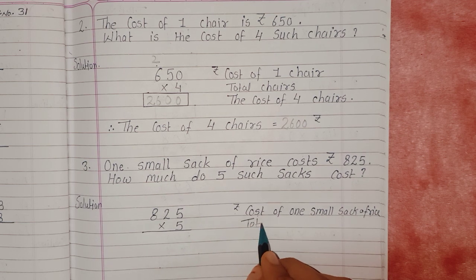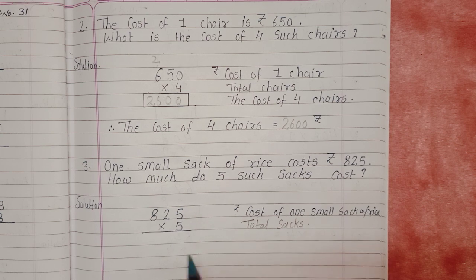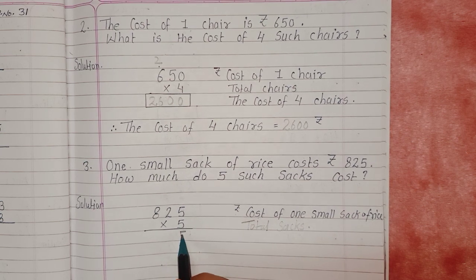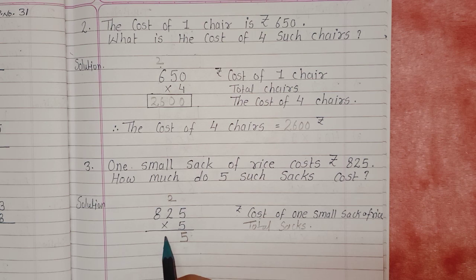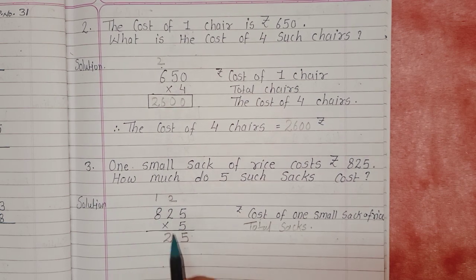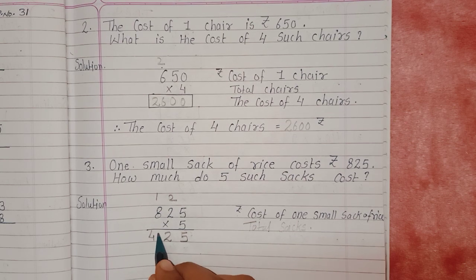Multiplied by 5. 5 times 5 is 25, 5 here, carry 2. 5 times 2 is 10, plus 2 is 12, 2 here, carry 1. 5 times 8 is 40, plus 1 is 41.